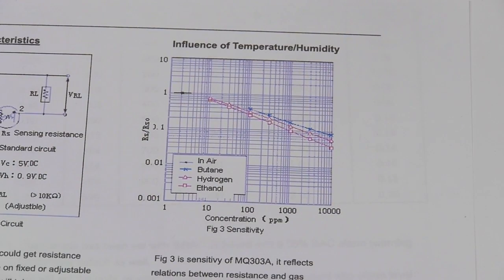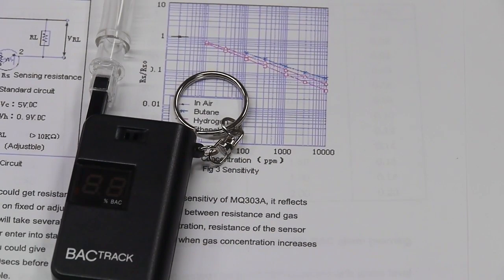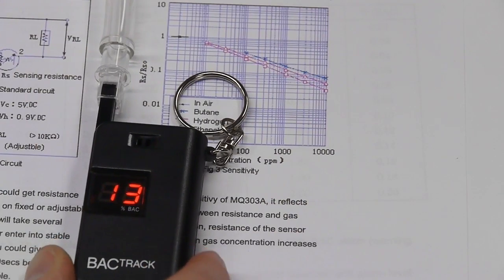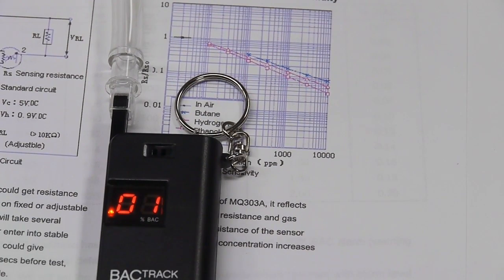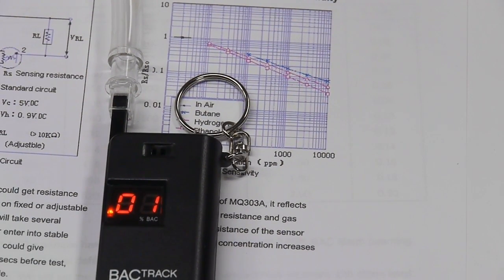So to test this out, I drank one and a half ounces of vodka exactly 20 minutes ago. My blood alcohol content should be at that peak that we saw in the graph. So let's try it out. It shows a 0.01 percent blood alcohol concentration. Just for reference, I weigh about 150 something pounds.